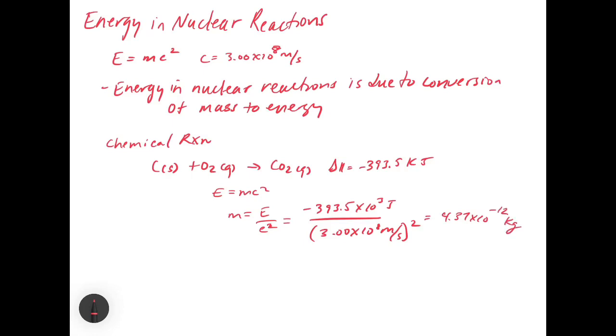This would give us a mass of 4.37 times 10 to the minus 12 kilograms. Now, it's important that we take some notes about the units. When we do this, the units for mass have to be in kilograms, and the units for energy have to be in joules.